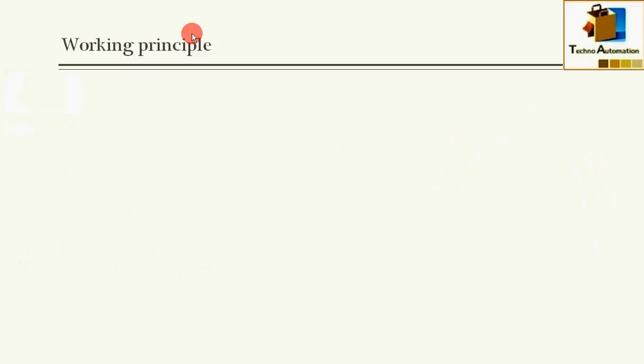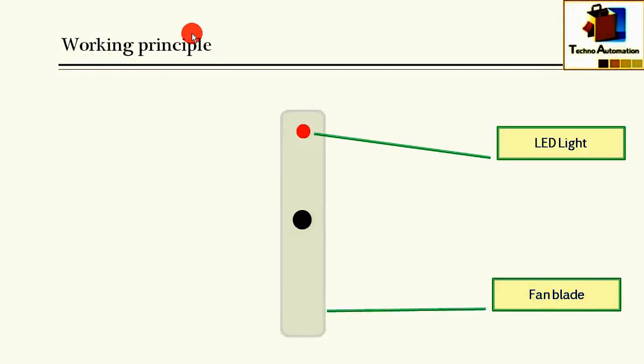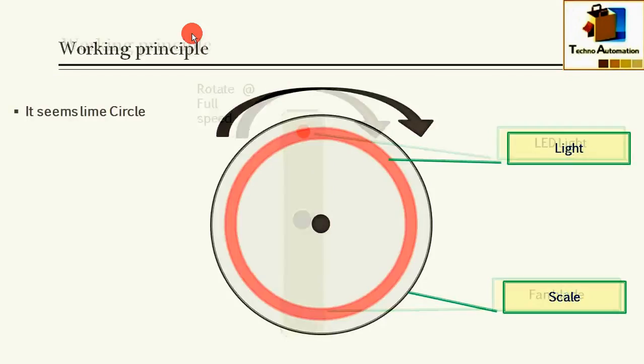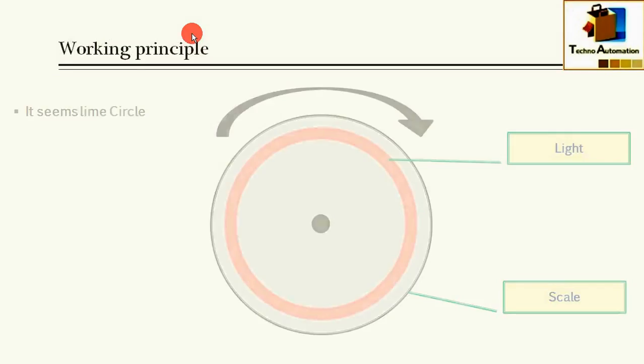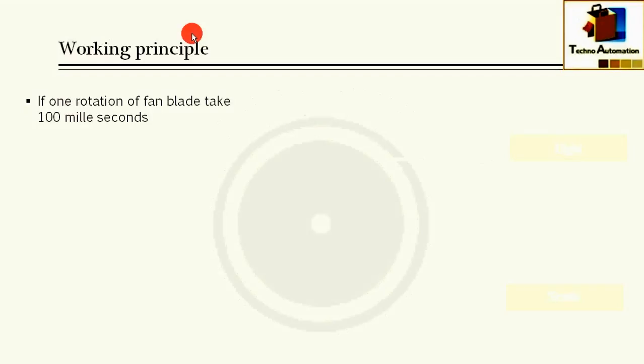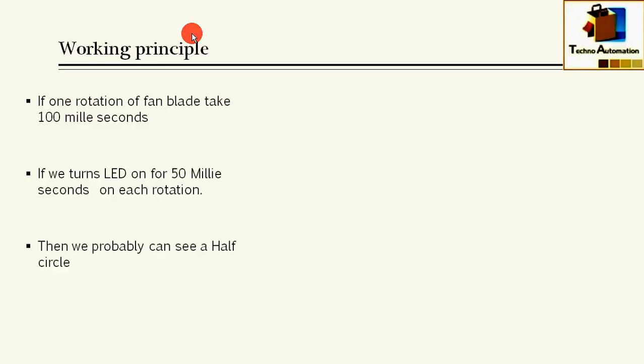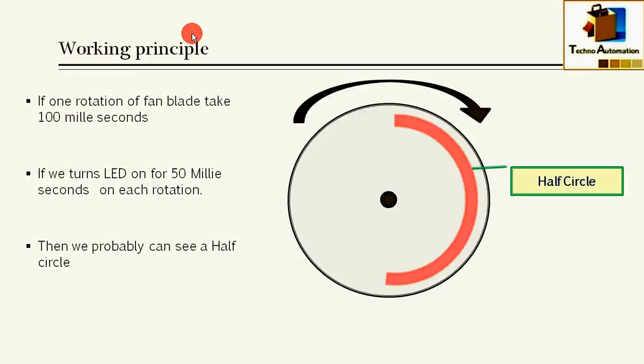First of all, I'd like to explain the working principle of POV fan display. Let's assume we have one fan blade having LED installed at one corner of that blade, and if we rotate this fan at full speed, then we're going to see a circle. If one rotation of fan blade takes 100 milliseconds and if we turn LED on for 50 milliseconds on each rotation, then we can see a half circle.